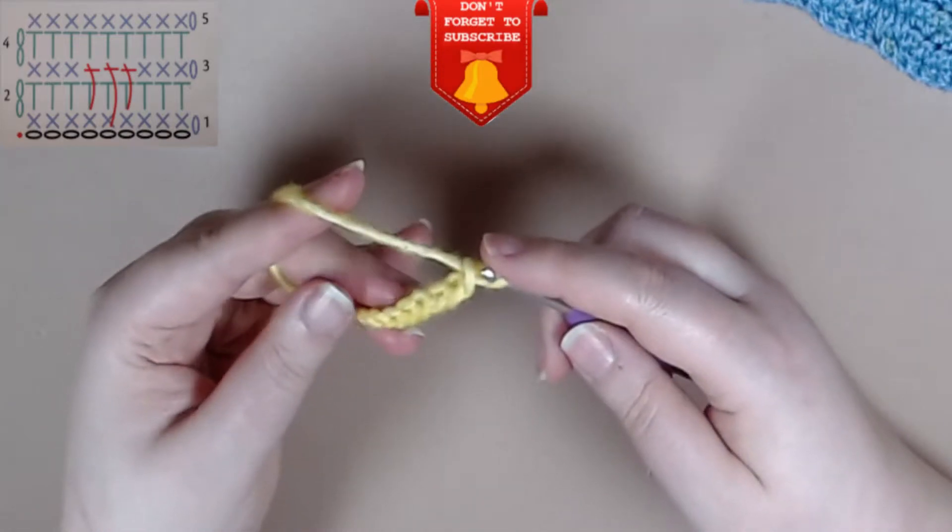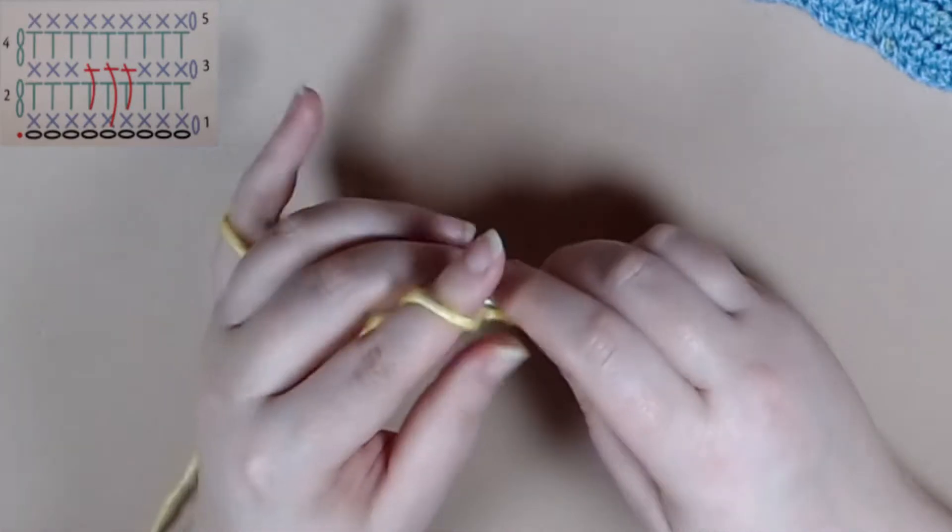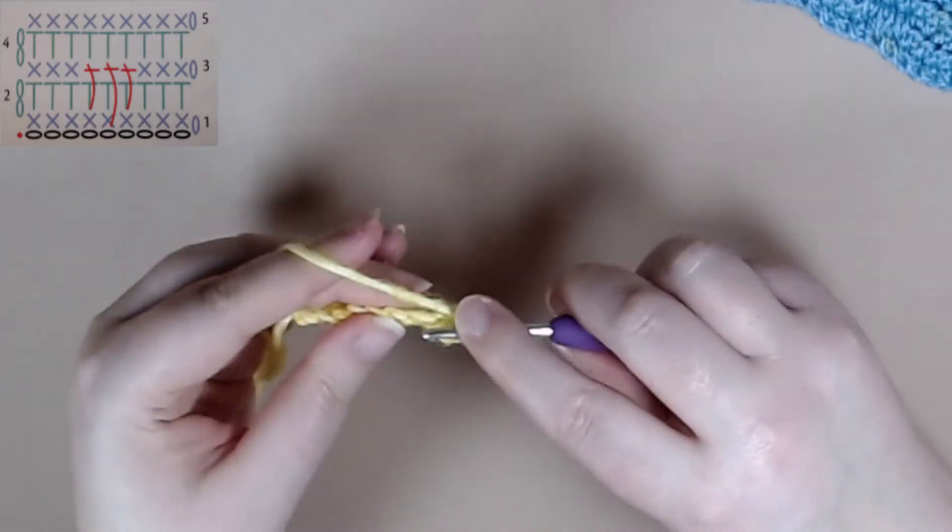Once you have all of your chains you want to start off by chaining one and in the second chain from the hook you're going to work a double crochet followed by double crochet all the way till the end of the row.